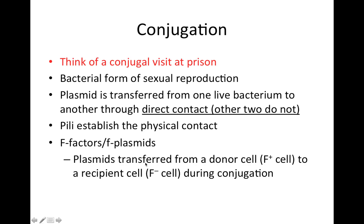Conjugation — remember this one by thinking of a conjugal visit at a prison, because this is the bacterial form of sexual reproduction. In conjugation, a plasmid is transferred from one live bacterium to another through direct contact. Remember, in the other two I specifically mentioned no direct contact — so that's a topic that's tested on and comes up sometimes.